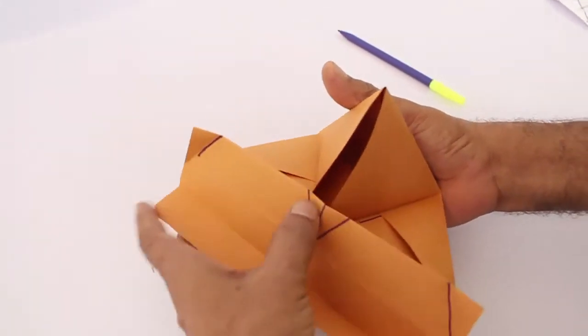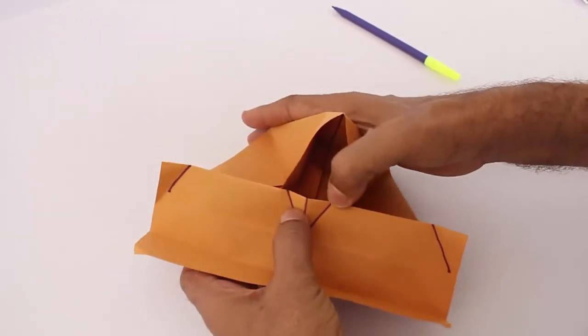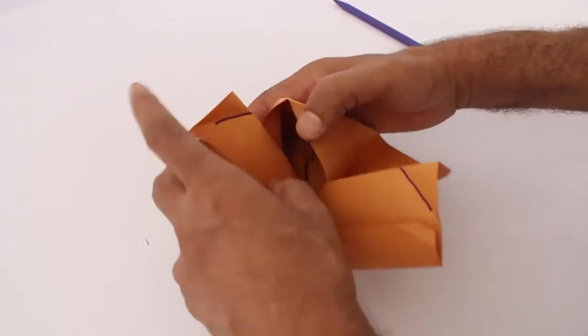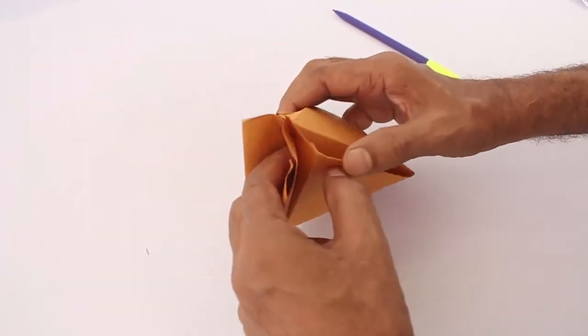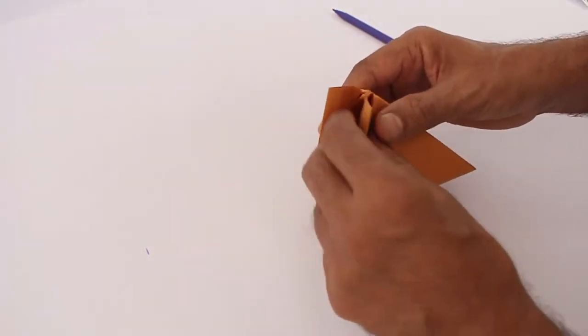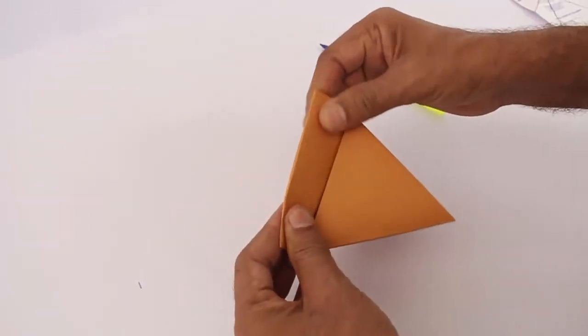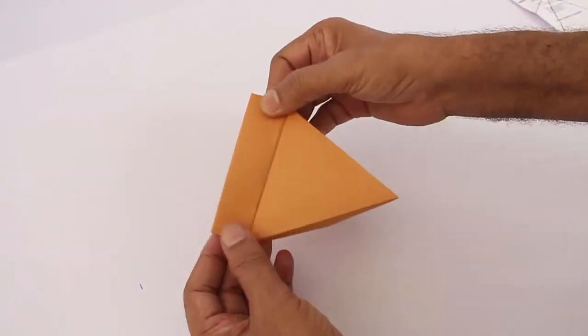You will also have to open up the crease in the middle and tuck all the extra bits into the tetrahedron and lock them up. Slowly you can see the tetrahedron taking shape.